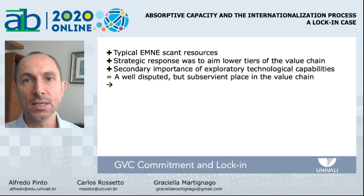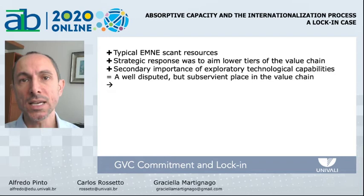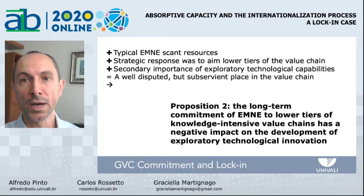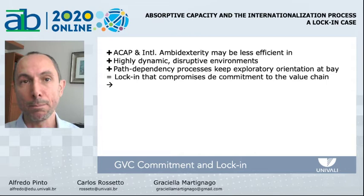Given the typical emerging market multinational enterprise's scarce resources, the strategic response of the managers to the highly structured hierarchy and knowledge governance of the automotive global value chain was to aim for lower tiers of the value chain. Successful outcomes of such a strategy led to a path where exploratory technological capabilities were of secondary importance, and the company conquered a well-disputed but subservient place in the value chain. Following this logic, it is reasonable to posit that the long-term commitment of emerging market multinational enterprises to lower tiers of knowledge-intensive value chains has a negative impact on the development of exploratory technological innovation dynamic capabilities, such as absorptive capacity and international ambidexterity.